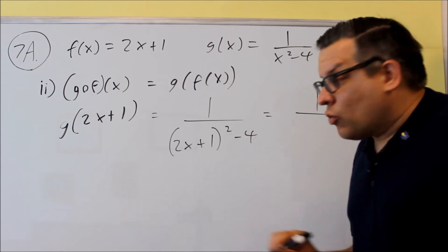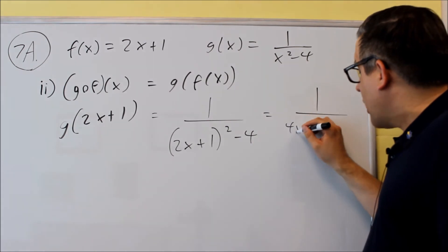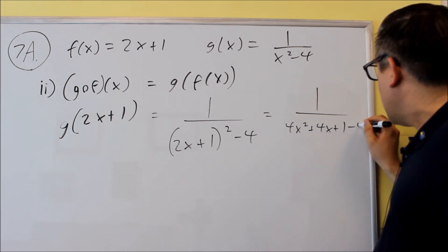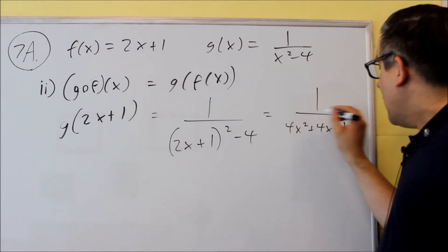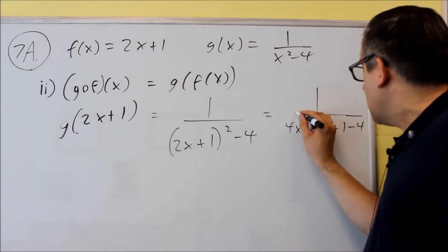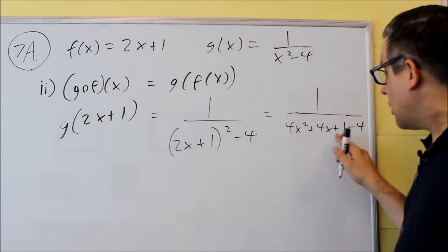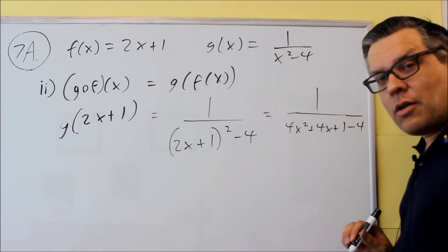Okay, so this part, when I multiply it, I'm going to get 4x squared plus 4x plus 1, and I still have a minus 4 on the end. So that's what I get once I throw that in. So 4x squared plus 4x plus 1, and then minus 4. I'm going to simplify that.